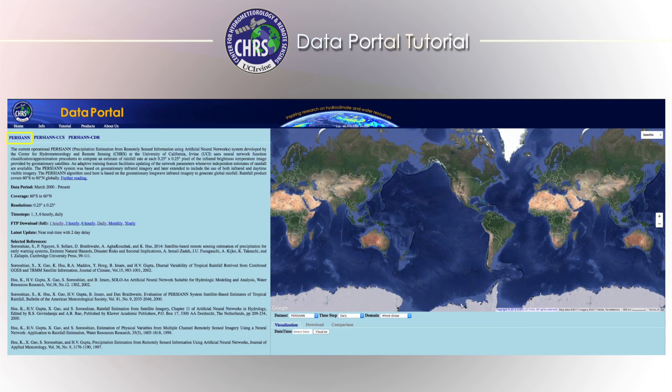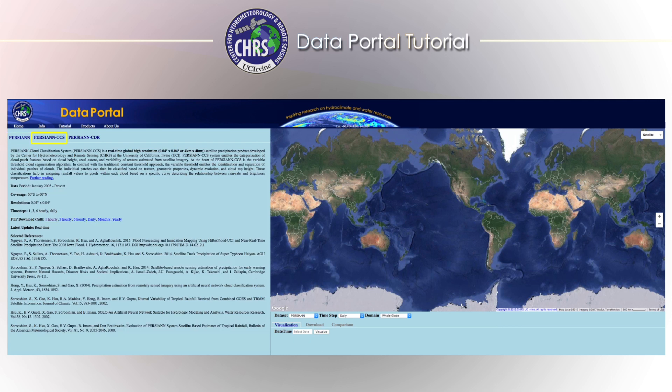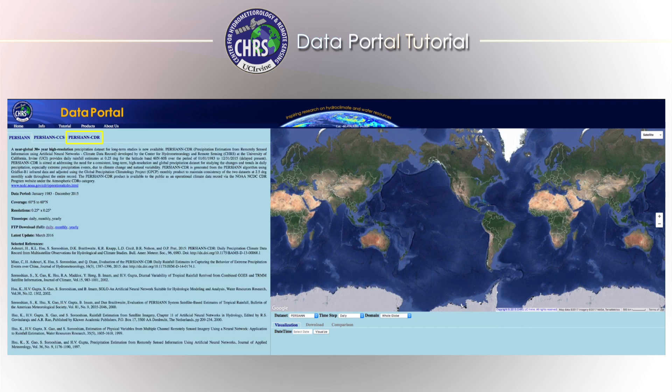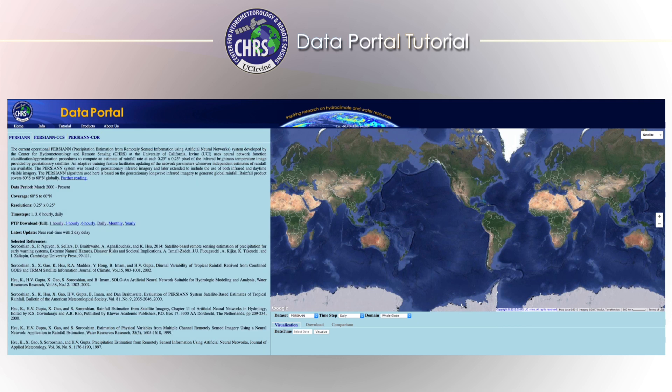Currently, PERSIANN data is available from March 2000 to a couple days before the present day. PERSIANN CCS data is available from January 2003 to the present day, and PERSIANN CDR is available from January 1983 and is updated quarterly. Information about these three systems, including references to papers chronicling their development, is available under their section on the left-hand side of the Data Portal.